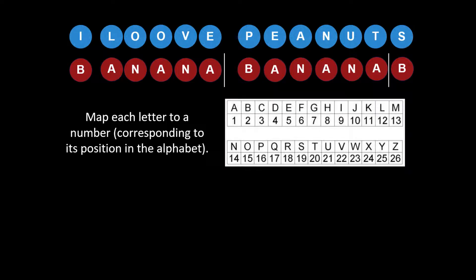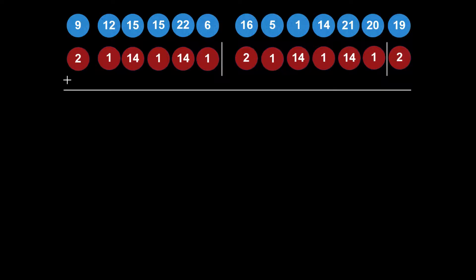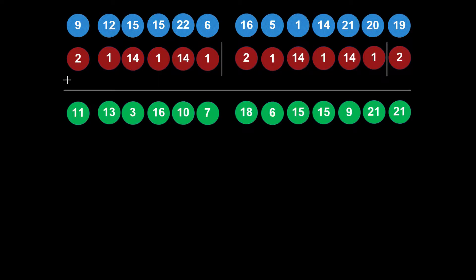We map each letter to its position in the alphabet — for example, I becomes 9, L becomes 12, O becomes 15, etc. We do that for all letters. Then we add them element-wise: 9 adds with 2, 12 adds with 1, 15 adds with 14, and so on. The key thing to remember is that it's modulus 26, so 15 plus 14 mod 26 becomes 3.